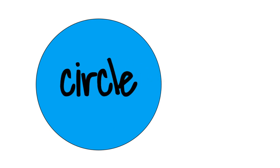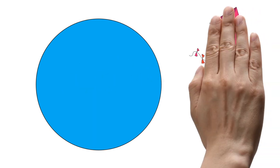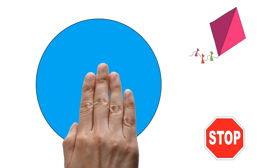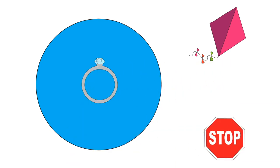This is a circle. Can you see an object that is shaped like a circle? A ring is shaped like a circle. Circle.